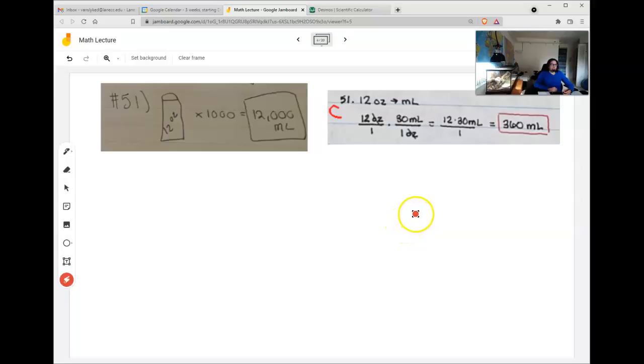Now we're in milliliters. That's what we wanted. And so multiply across the top. 12 times 30. Multiply across the bottom. 1 times 1 is 1. That over 1 goes away. 12 times 30 is 360. This process was called a unit analysis.